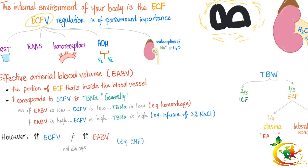That's why regulation of the extracellular fluid volume is very important. Your body regulates it through: thirst mechanisms, the renin-angiotensin-aldosterone system, baroreceptors found in the aortic arch and carotid sinus, ADH acting on V1 and V2 receptors, as well as reabsorption of salt and water by the kidney.